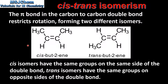On the left we have cis-but-2-ene, on the right we have trans-but-2-ene. As we can see from these two examples, to have cis-trans isomerism there must be two different groups bonded to each carbon atom in the carbon-to-carbon double bond.